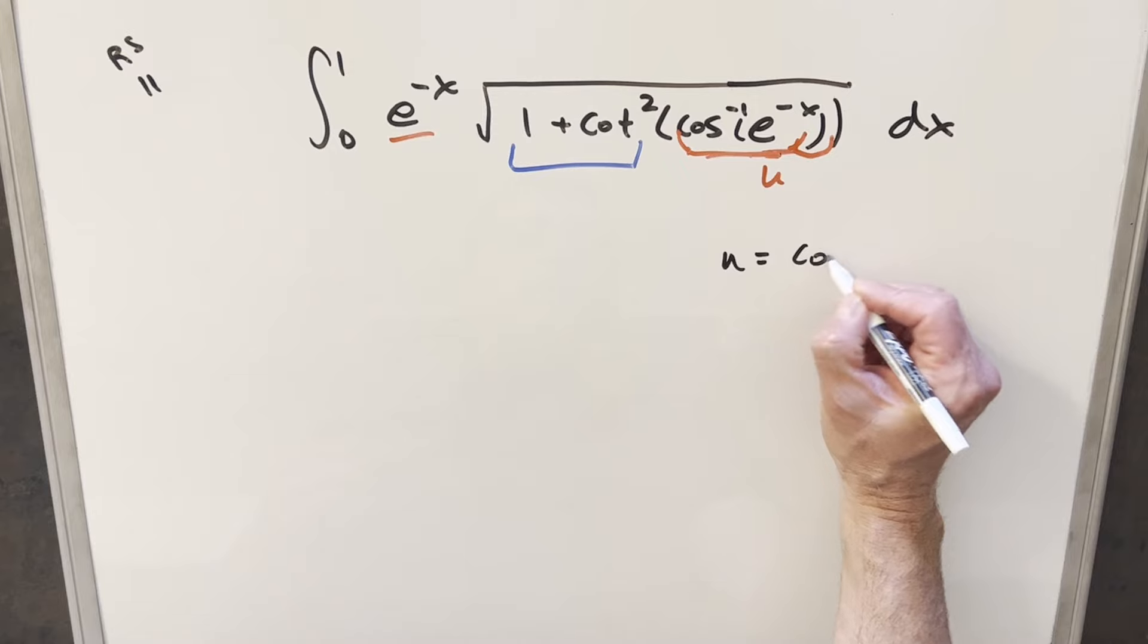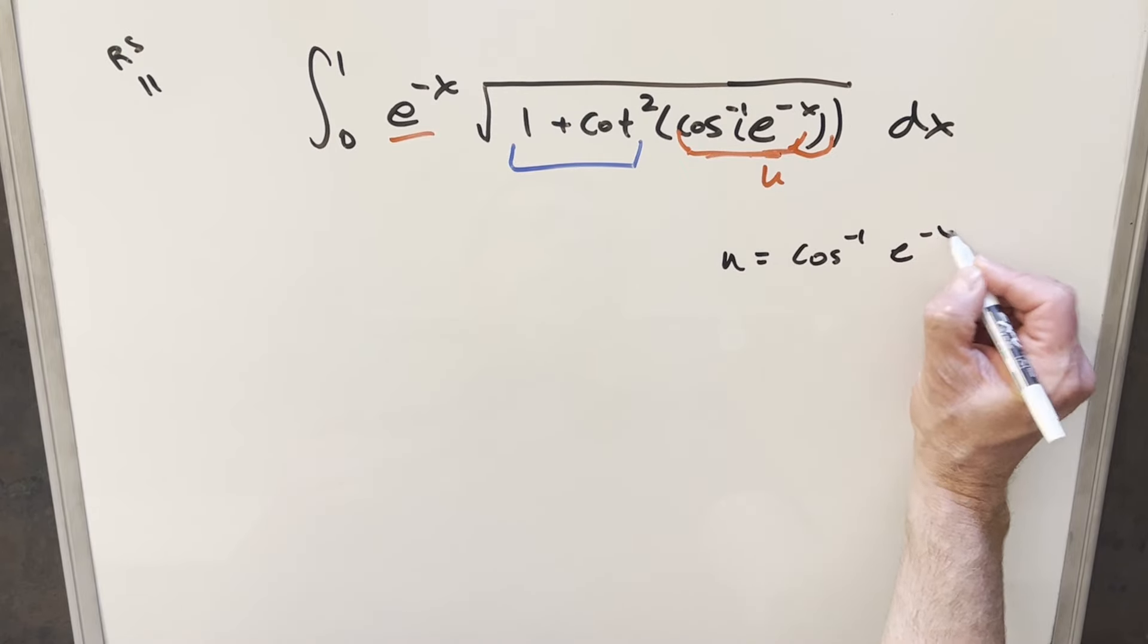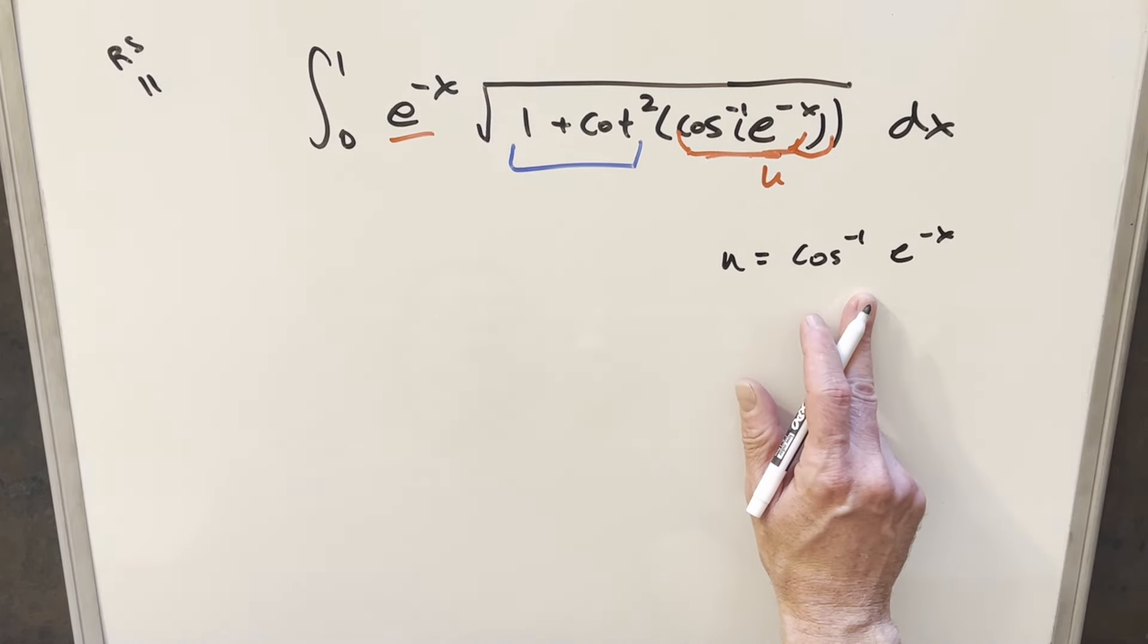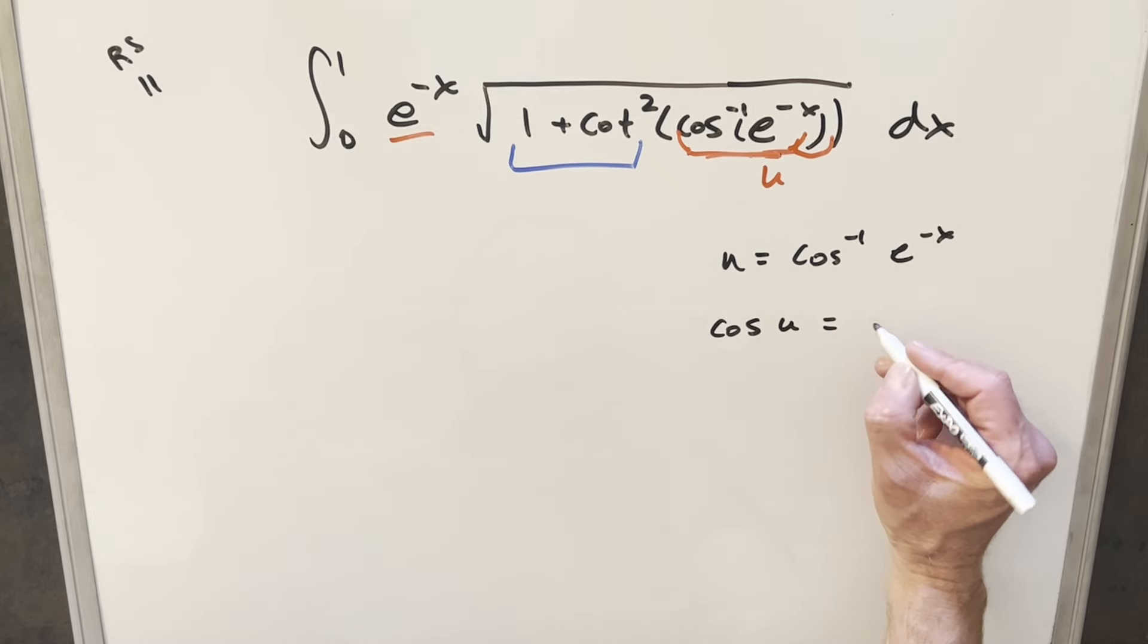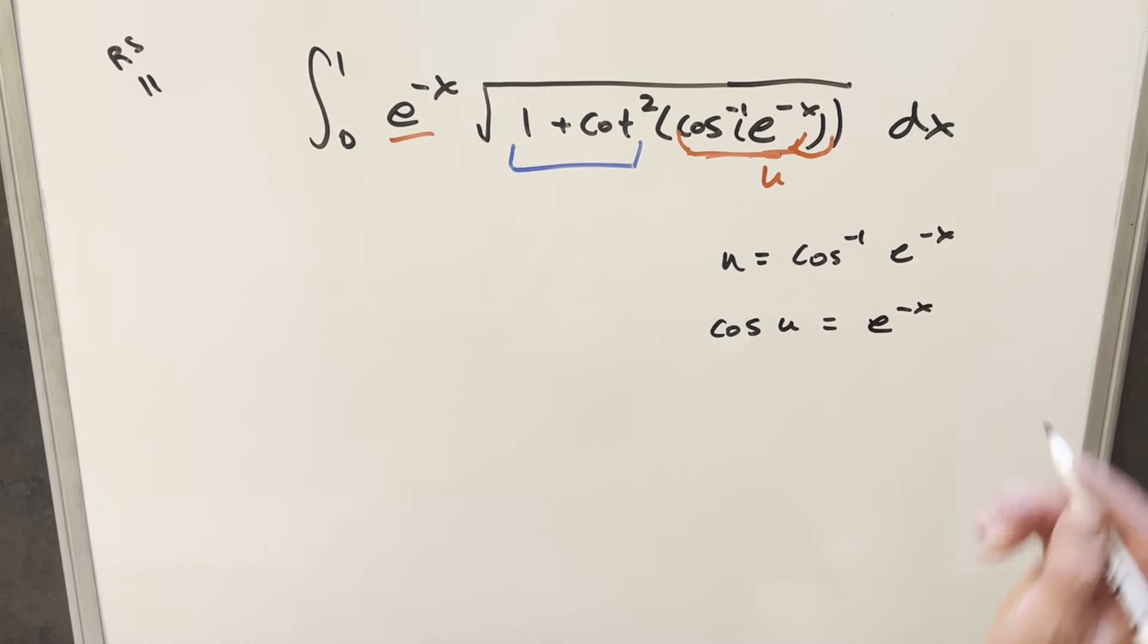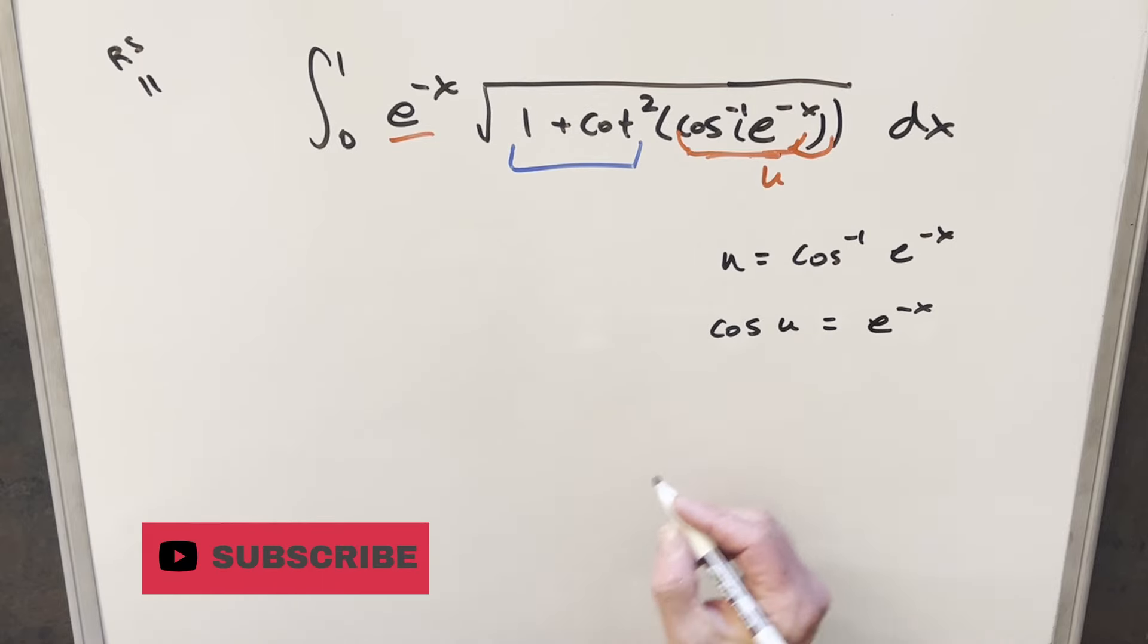We'll do our u substitution for arc cosine e minus x. But let's just rearrange this, taking cosine on both sides, we can write this as cosine u equal to e to the minus x. And then let's just take a derivative here.